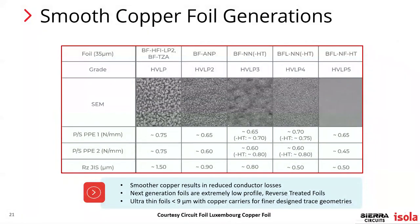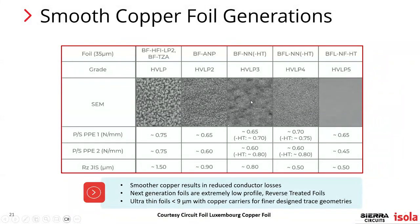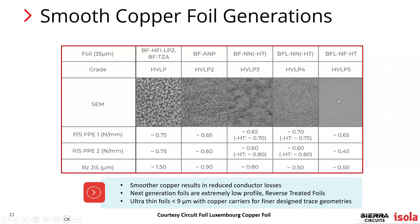This is a Circuit Foil Luxembourg chart showing the direction they're going with their products. The current HVLP is used on products like Tachyon 100G, but Isola also uses BFNN as the next generation VLP-one or one-micron copper. The advanced RTF copper is pretty good compared to these, and is probably the current best available. Isola is working on a product where surface profiles are lower and nodulation is finer. Getting down to HVLP5, this generation of copper foil material from suppliers will not have nodulation on it — it's in development this year and should become available after qualifications are complete.